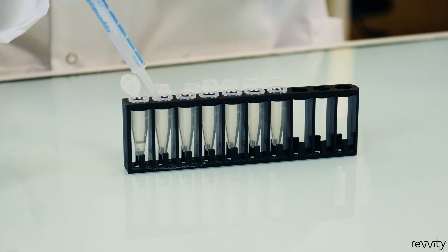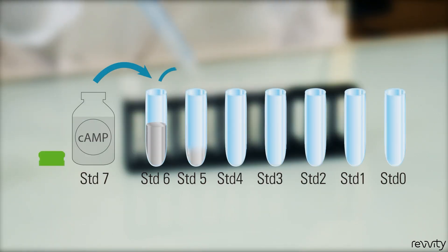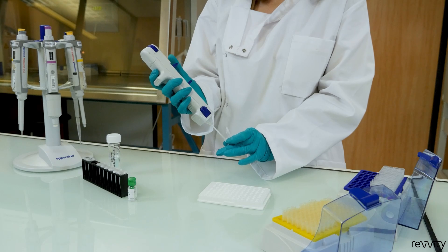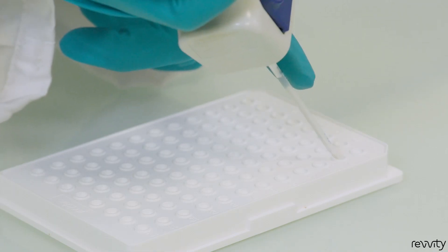Next step is to prepare your standard curve using the standard provided in the kit and the stimulation buffer. Make serial dilutions as indicated to obtain your standards. Run your standard curve in triplicate following the instructions in the protocol provided with the kit.